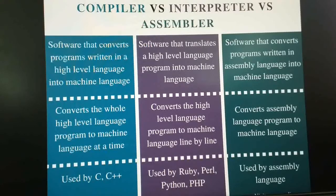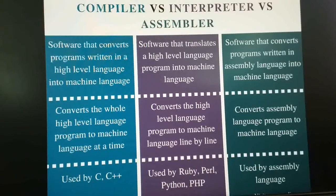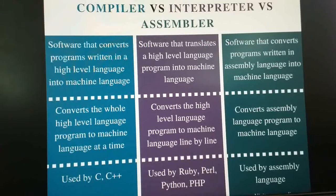The assembler converts assembly language programs into machine language so that the computer can understand our language through these programming languages. The computer then gives the results, and the converters translate the output so that we can also understand the results.